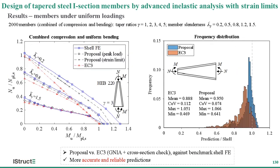For tapered members under combined compression and uniform bending, involving bending moment and axial force interaction, the figure presents the frequency distribution of ratios of ultimate resistances predicted by the proposed design method and Eurocode to benchmark shell FE results. It can be seen that the proposed design method provides more accurate and reliable predictions.